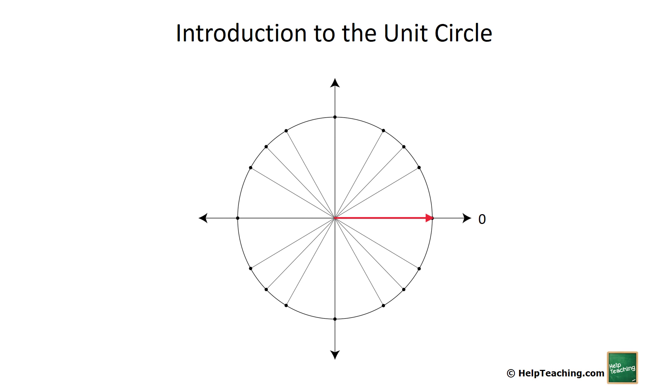In this lesson we're going to do a quick introduction to the unit circle. So far, I'm sure you've always done your measurement of angles in degrees. At this point we're going to start using radians. Radians are a way of measuring angles that is relative to the length of the radius.